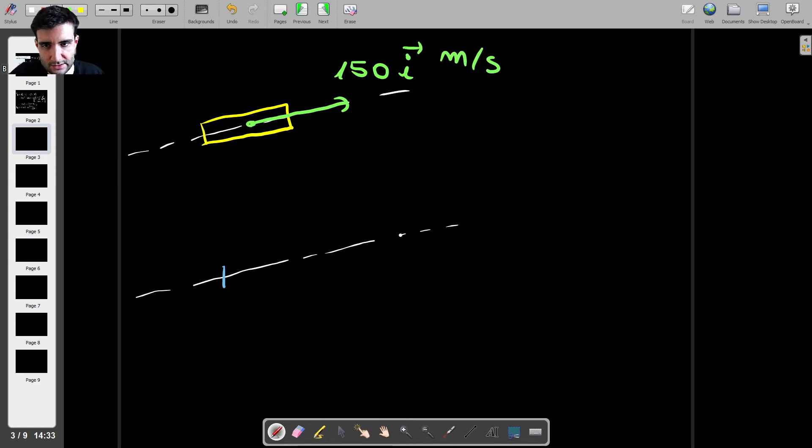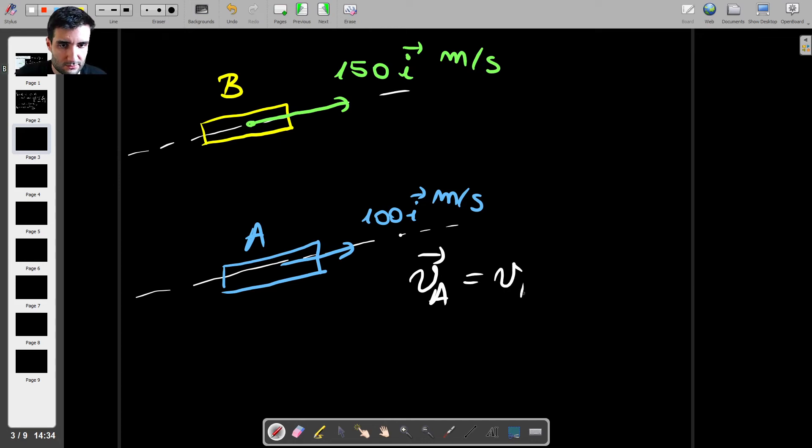And you've got the other aircraft, that's A, traveling with 100 meters per second. So this is aircraft B, and this is aircraft A, so let's try to find the relative velocity in this case. So we have, using Euler's equation for velocity, that VA equals VB plus the relative velocity, right? Because this term that we usually include is zero.